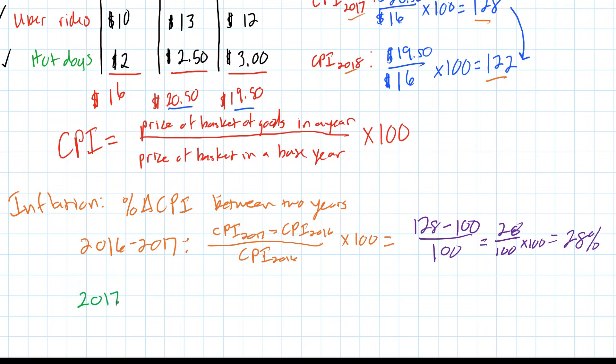From 2017 to 2018, we can calculate the percentage change in the CPI. 2018 CPI was 122, 2017 CPI was 128, and we divide that by 128 and multiply the result by 100. We're going to need our calculator for this one, but we can do the top part here. 122 minus 128 is negative 6 divided by 128 times 100.